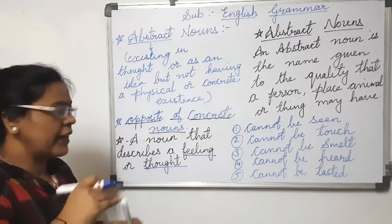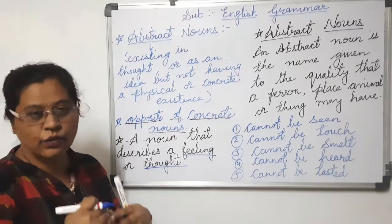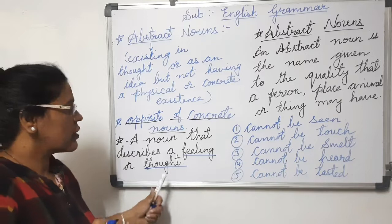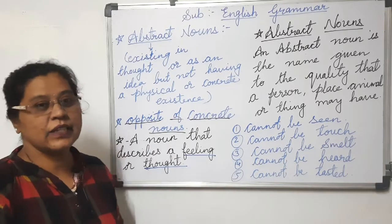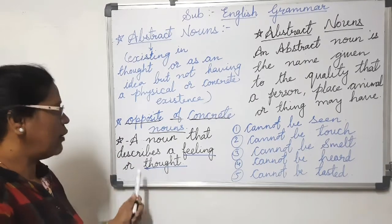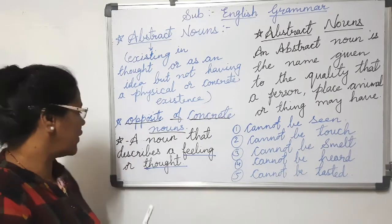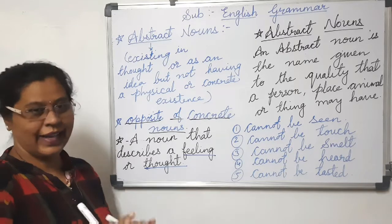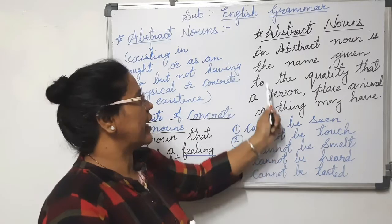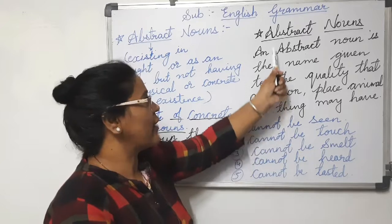These feelings no one can see, no one can touch, no one can smell — they are your own. Such words in English grammar are called abstract nouns. So a noun that describes a feeling or a thought is called an abstract noun.